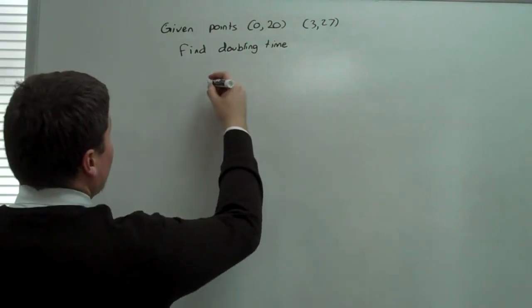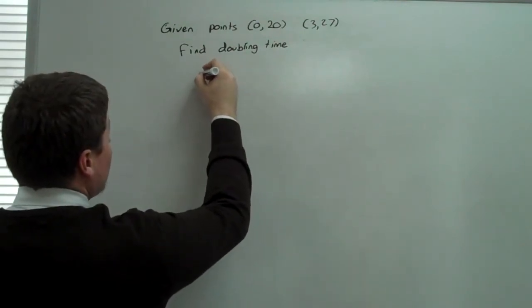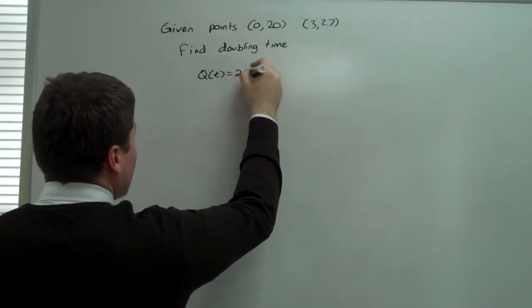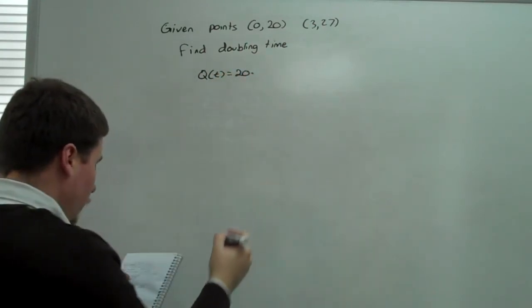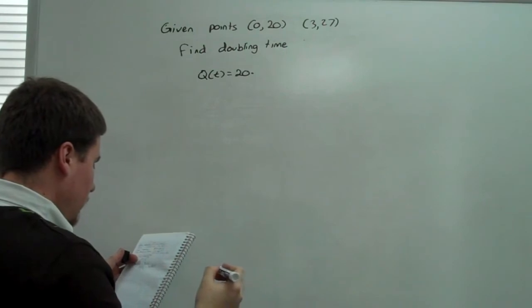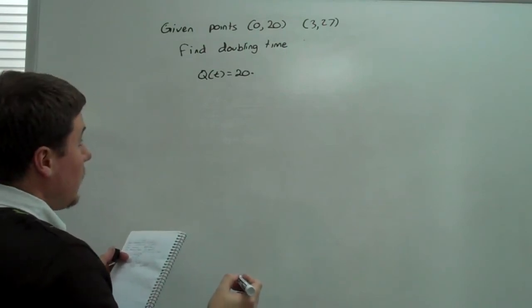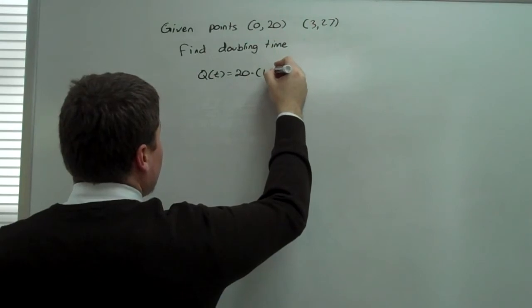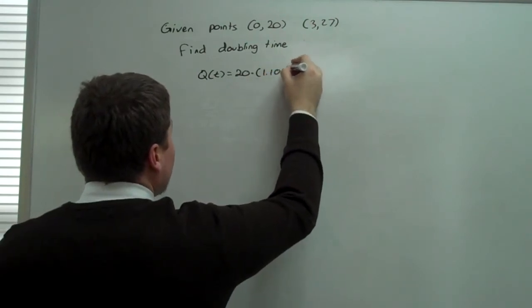So first, understand that this equation can be written as Q(t) equals 20 times 1.105 to the t. Or 1 point, yes, 1.105 to the t.